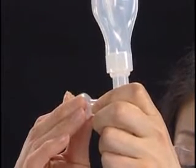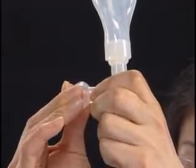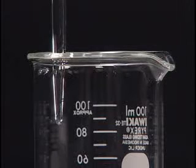Alternatively, plug the opening beside valve E. Press valve E and squeeze the small bulb beside valve E simultaneously.